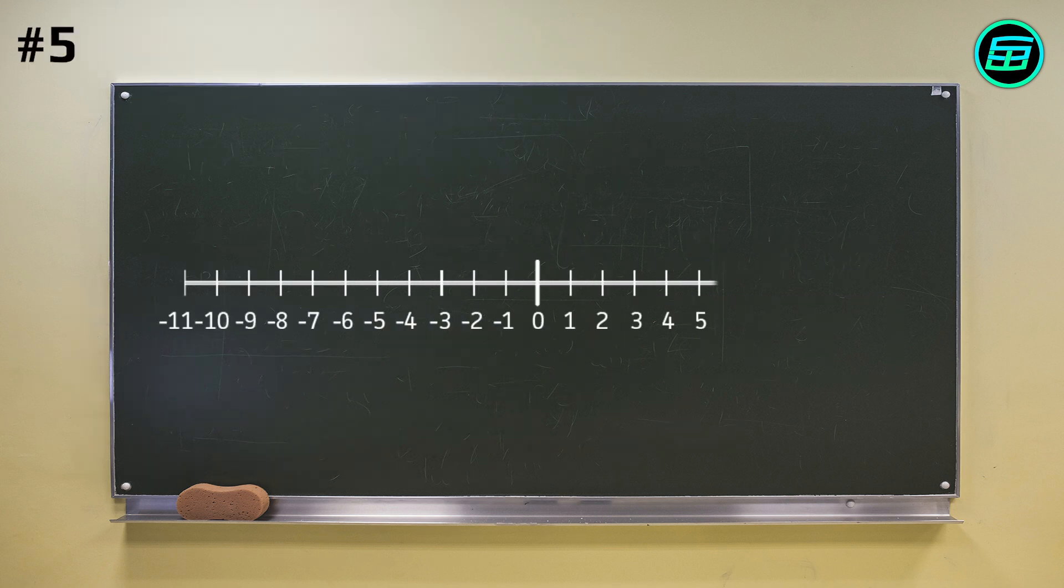Also, if we consider just integers, a number between two odd numbers must be an even number. 0 is between minus 1 and 1. So 0 is even.